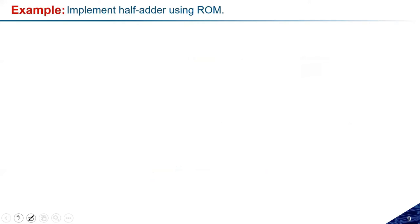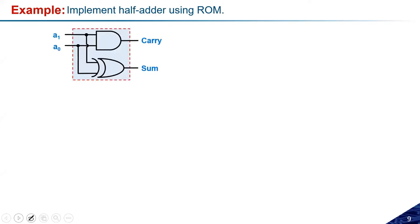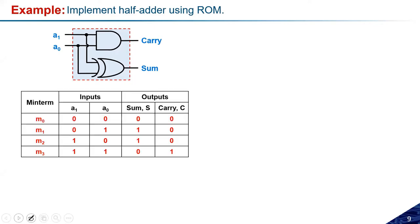Let's take the example: implement a half adder using read-only memory. ROM has both AND and OR arrays fixed — we cannot program it once done. The half adder has two inputs, A0 and A1, and two outputs, Sum and Carry. The truth table has input combinations 00, 01, 10, 11, with Sum = 0,1,1,0 and Carry = 0,0,0,1.